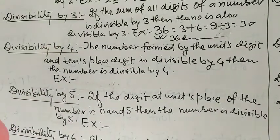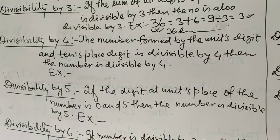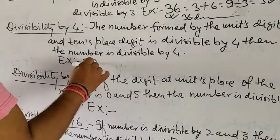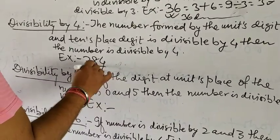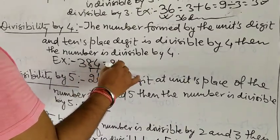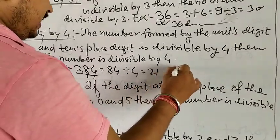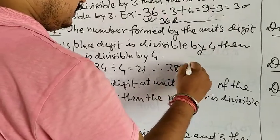Divisibility rule of 4: The number formed by the unit's digit and ten's place digit is divisible by 4, then the number is also divisible by 4. For example, 384: its unit's digit and ten's digit form 84. 84 divided by 4 gives 21, so 384 is divisible by 4.